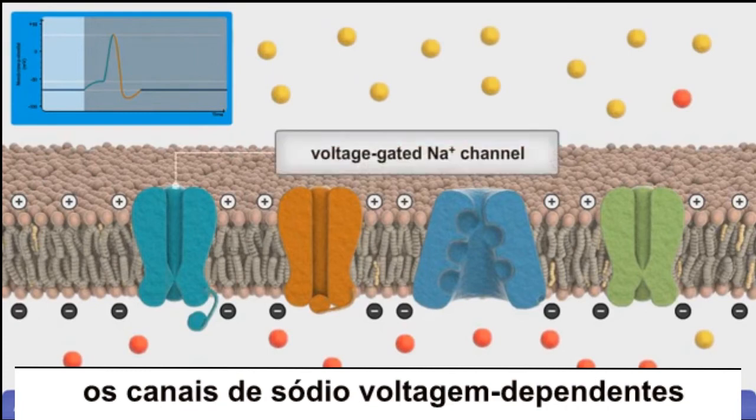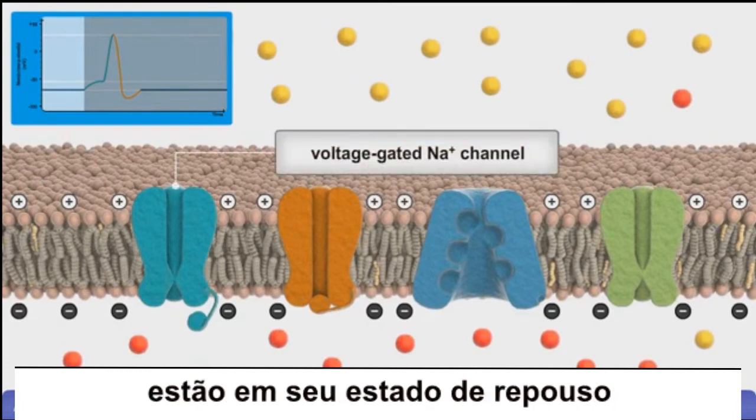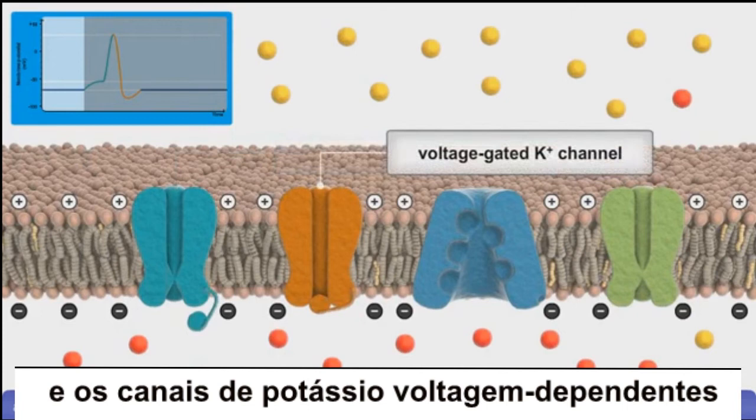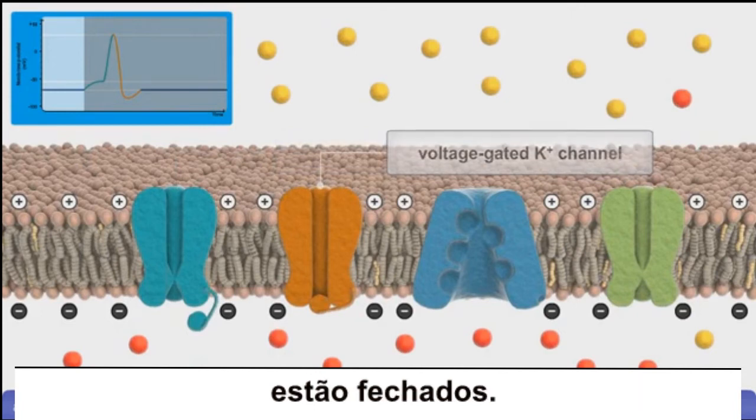At resting membrane potential, voltage-gated sodium channels are in their resting state, and voltage-gated potassium channels are closed.